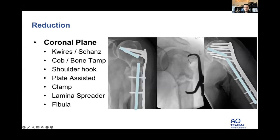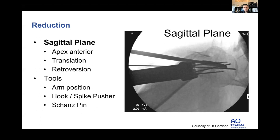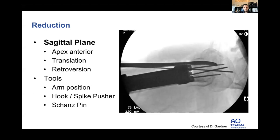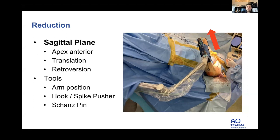For the sagittal plane — this is often missed when we see patients for second opinions for malunion or non-union. Here's a sagittal view showing an apex anterior deformity with wires already in place. To fix it, you forward elevate the humerus to correct the apex anterior deformity. In my practice I use a pneumatic arm positioner, forward elevating through that to hold the correction so I can then fix the plate.